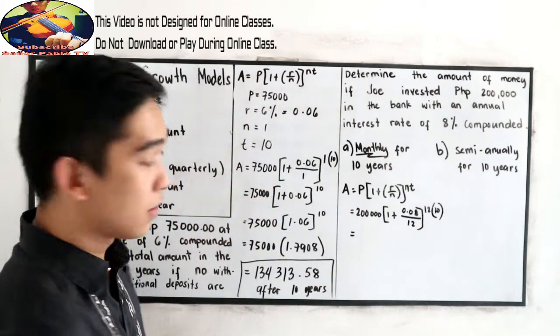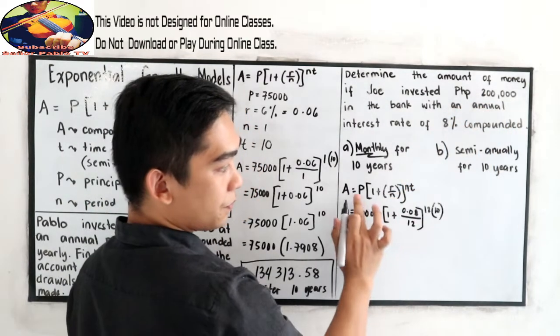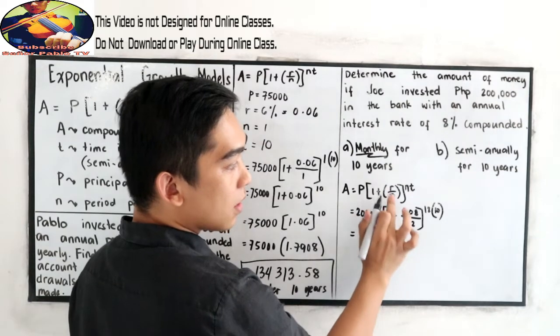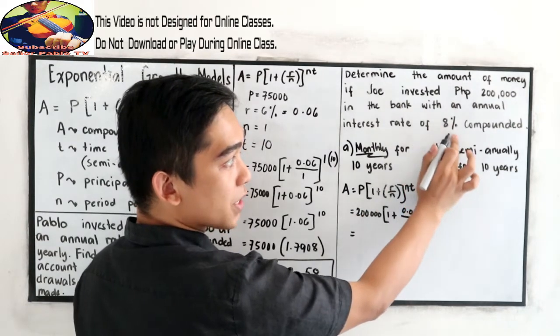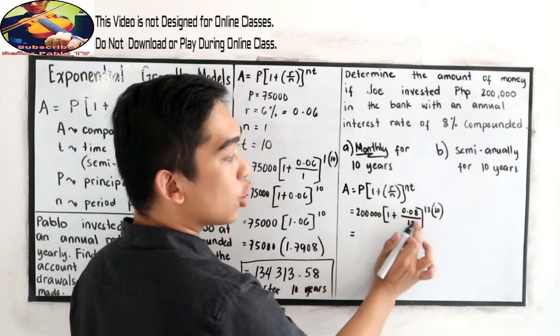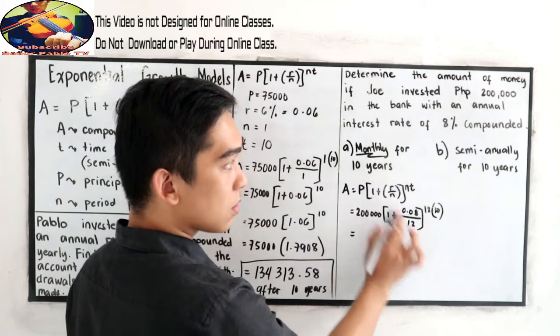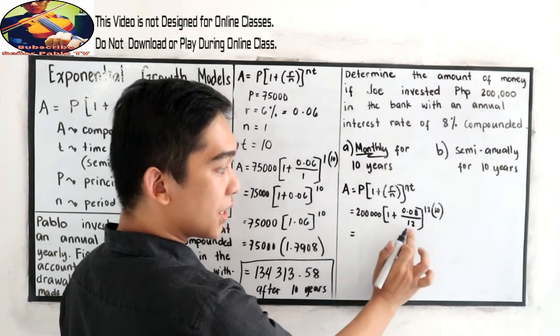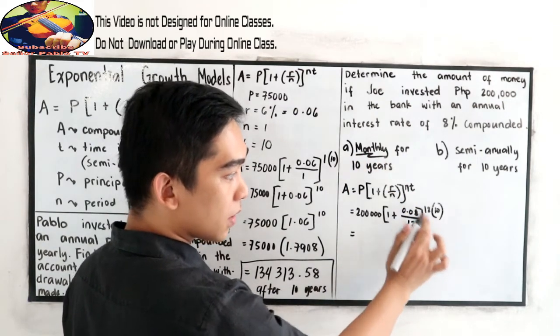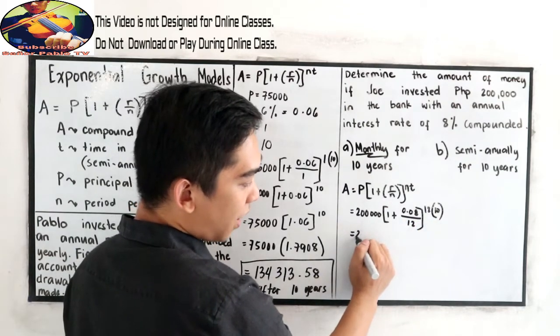Again, let us repeat. 200,000, that is our principal amount. Copy 1 plus our rate is 8%. In decimal, that is 0.08. Over our N, monthly. So, we have 12 months in a year. So, we have 12 times, our N is 12 times 10. Simplify.